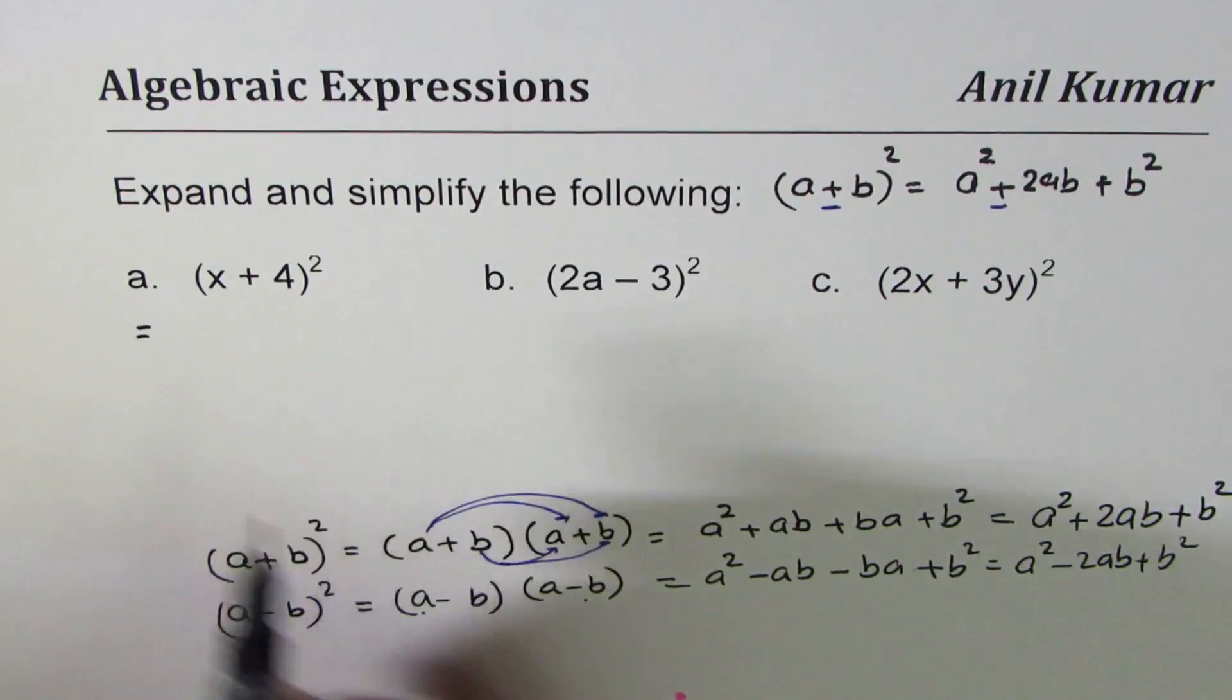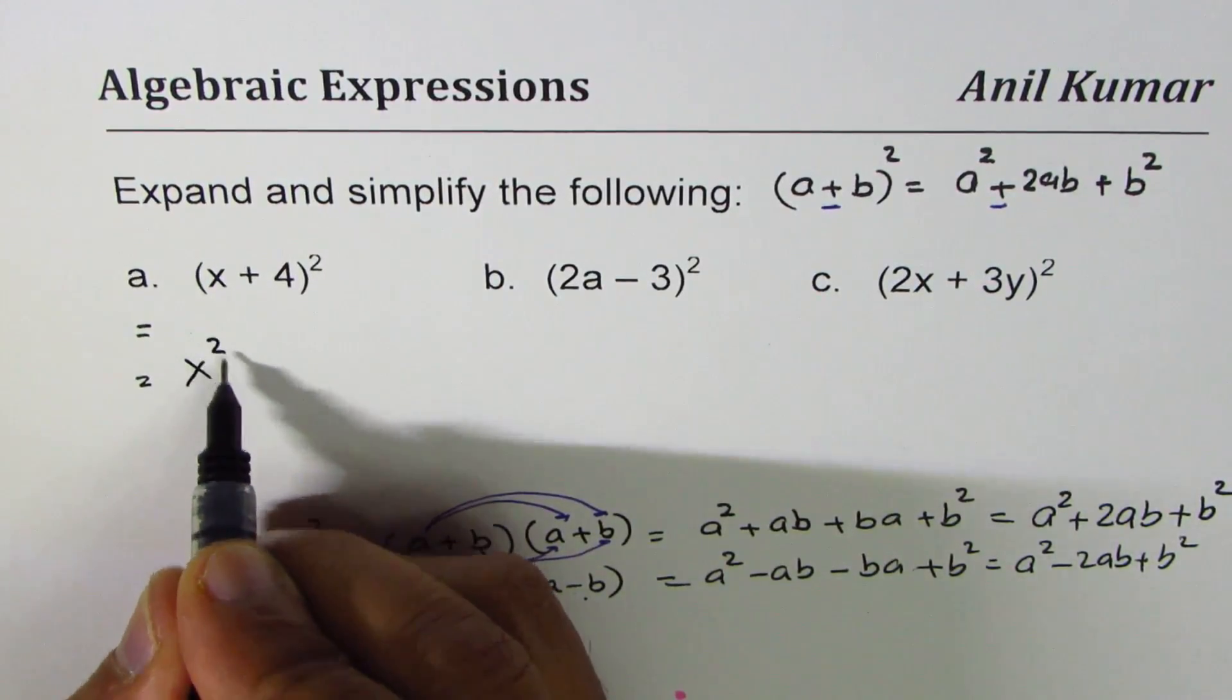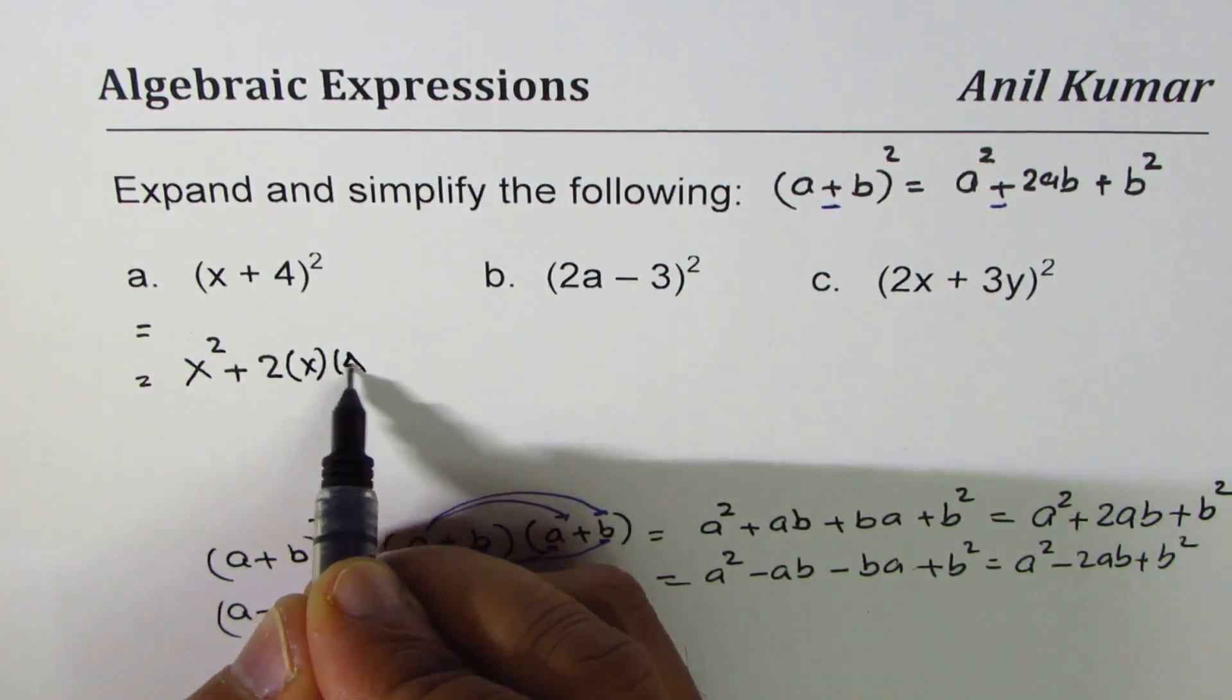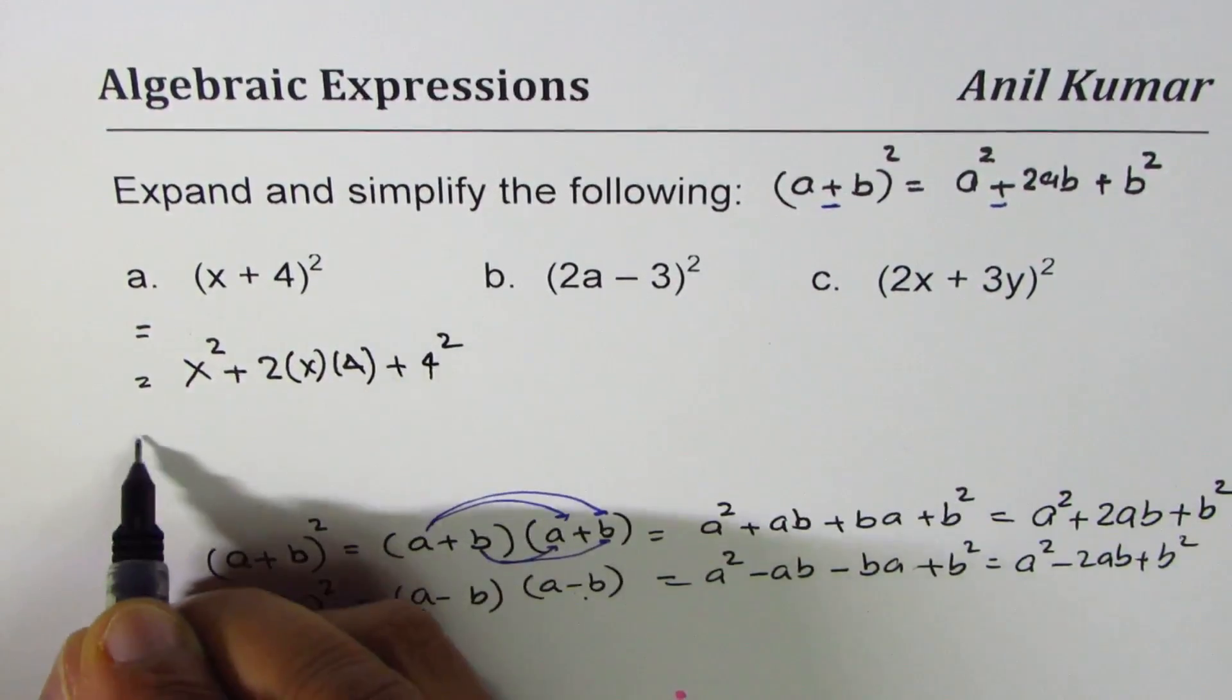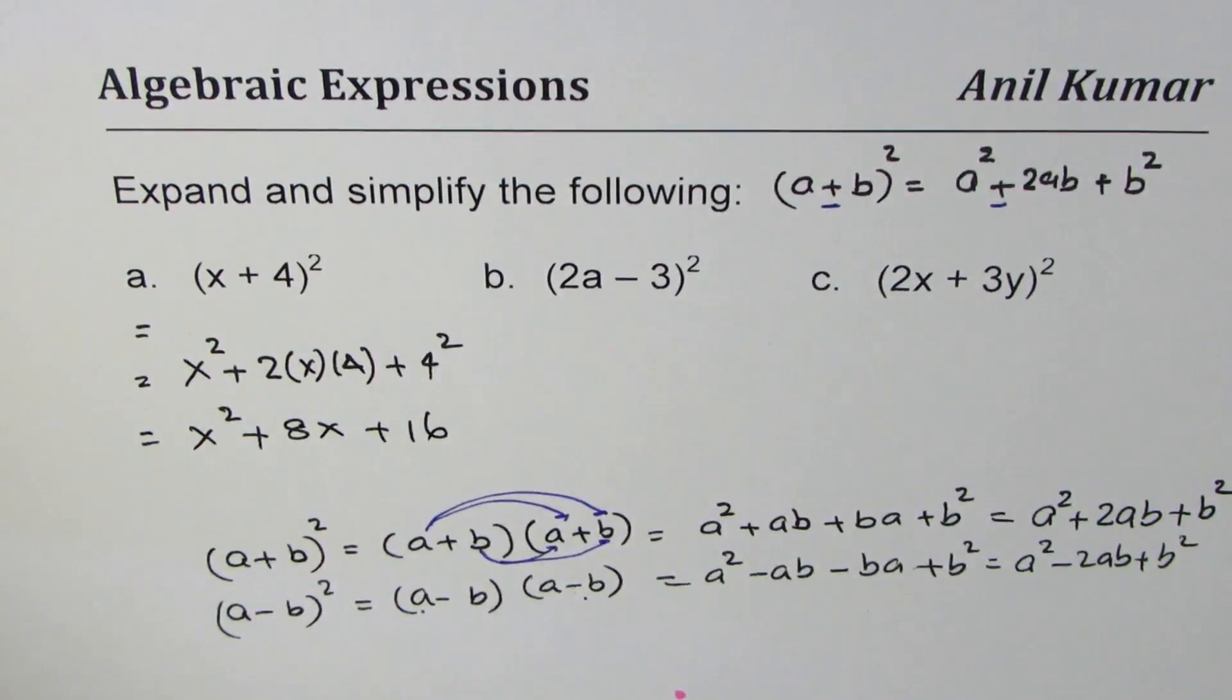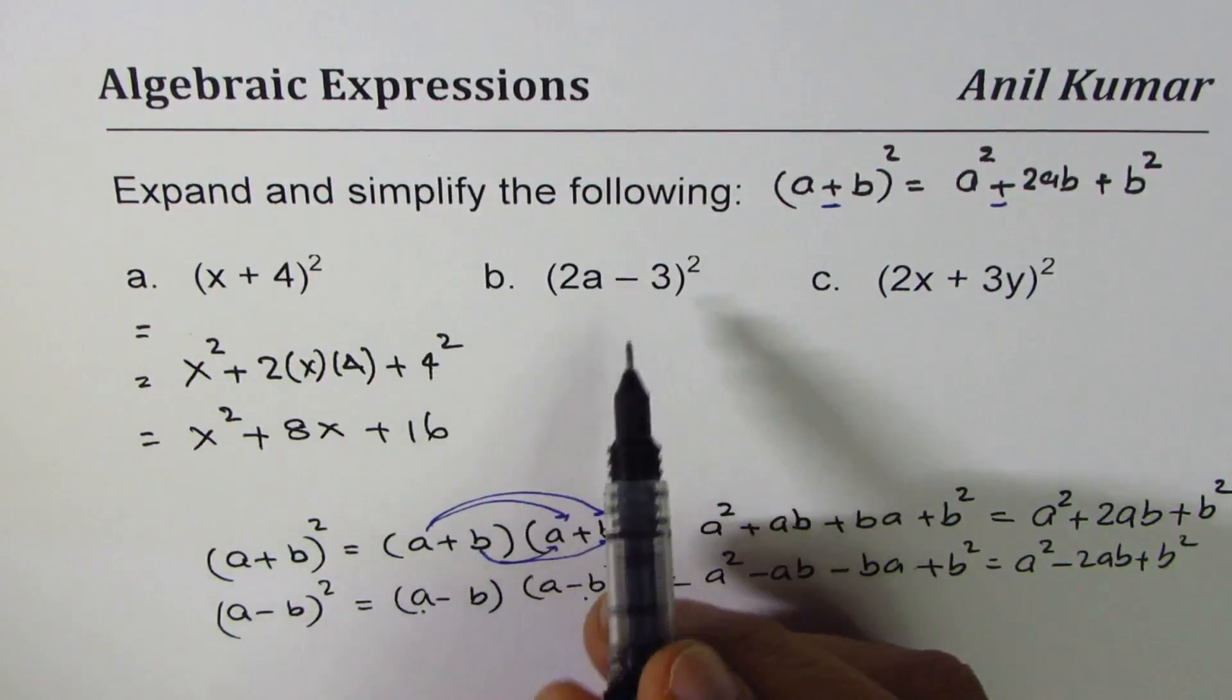So the first one here a is x, b is 4. So we get x square plus 2 times x and 4 plus 4 square. That is x square plus we should write numbers first, so 8x plus 16. And that is how you should be actually expanding perfect squares binomial squares.